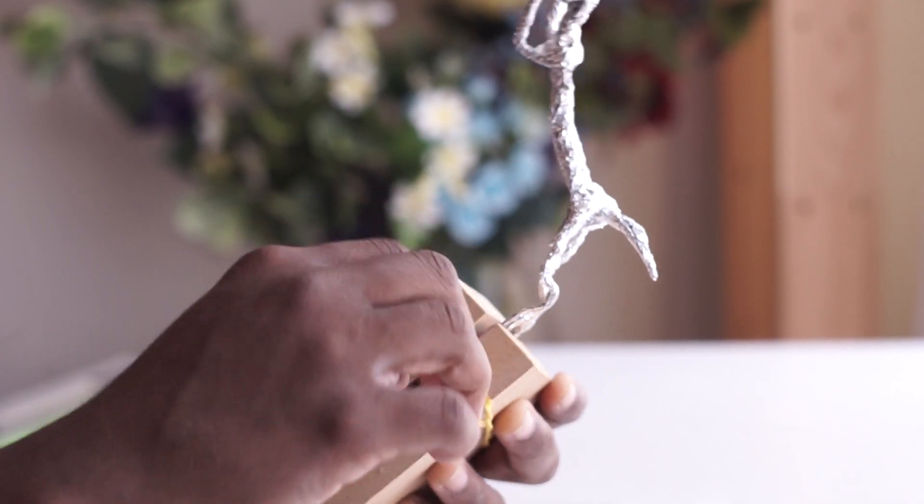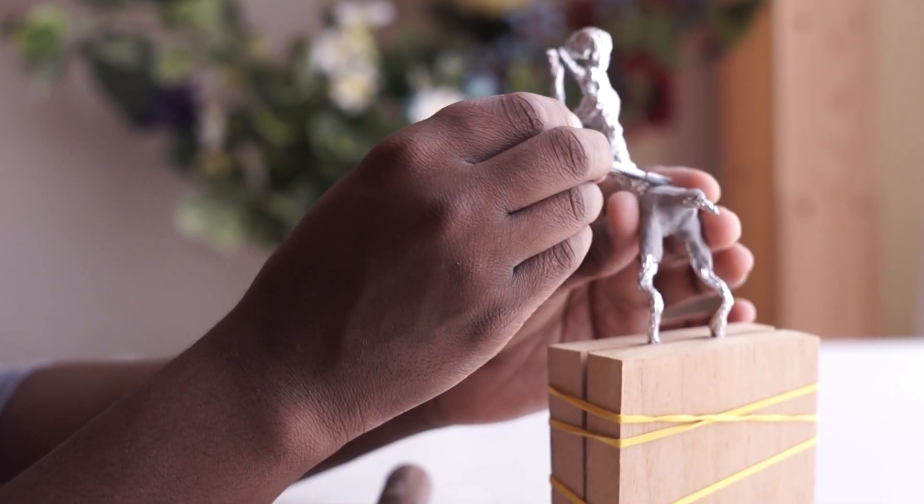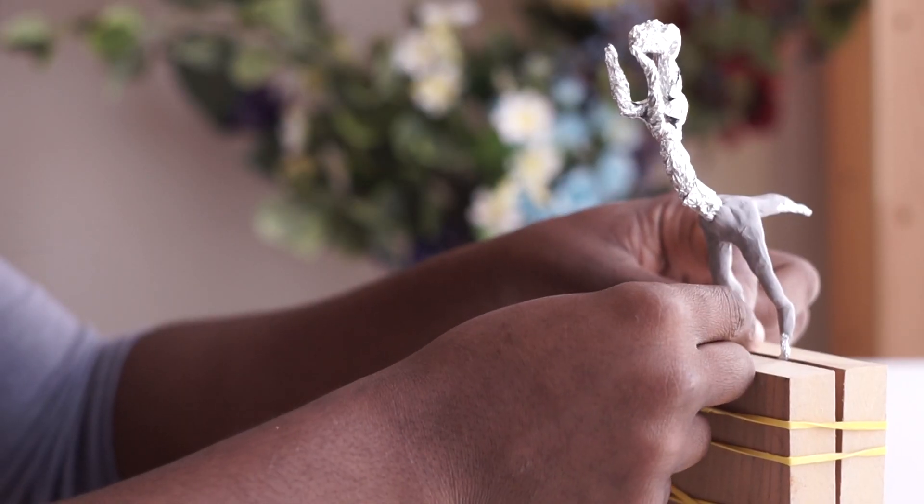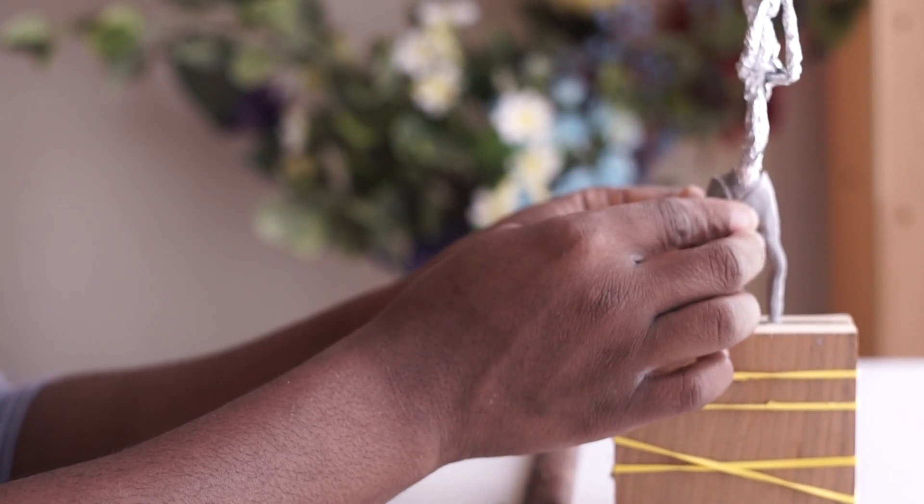But of course I had to start over and make him again. I think the main thing that went wrong is that his foil skeleton was way too fat in the beginning. And on the second version I made it a lot thinner so that his overall body could be less big.